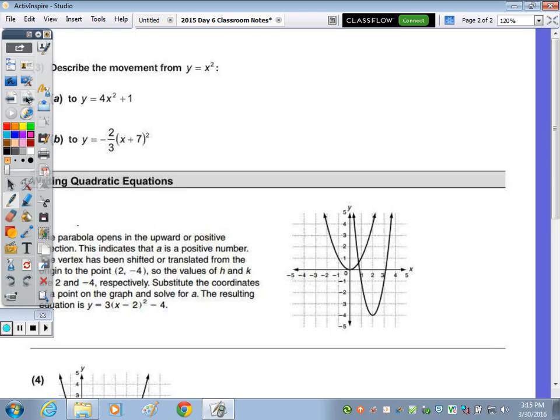In number 3, we're going to describe the movement, the shift, the translation. How is this parabola changing as we go from y equals x squared to part A, 4x squared plus 1? Well, a positive 1 to a positive 4 is staying right side up, but that's going to make it more narrow. So this one is narrower.